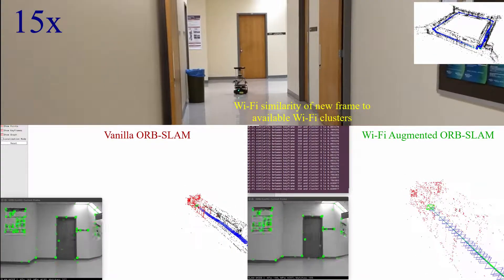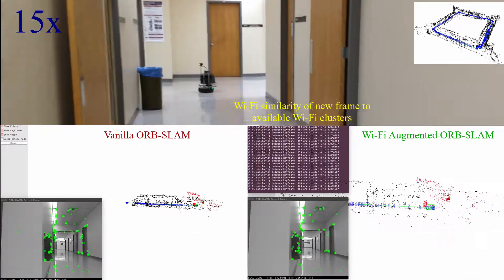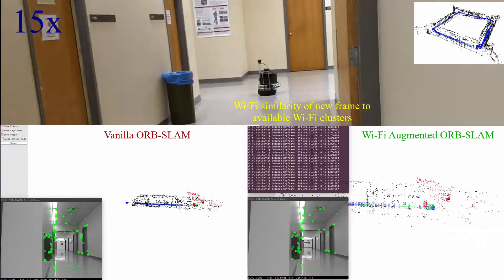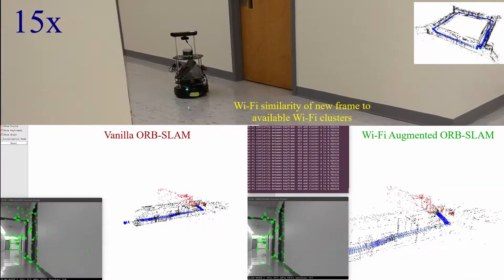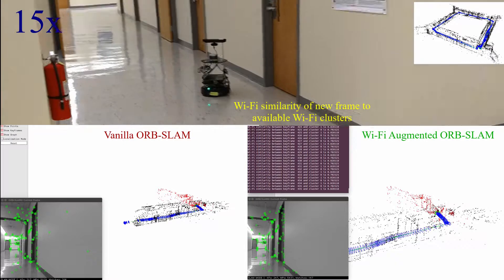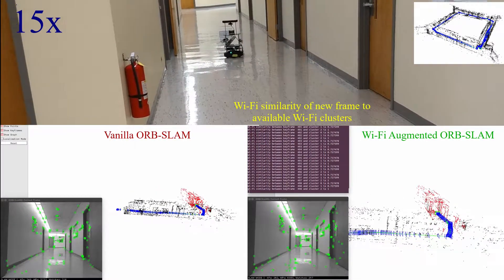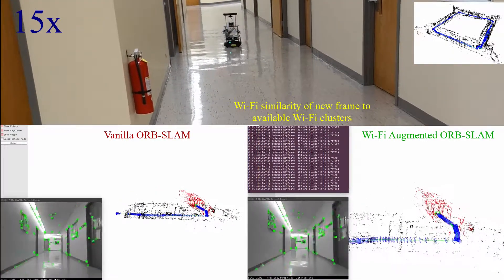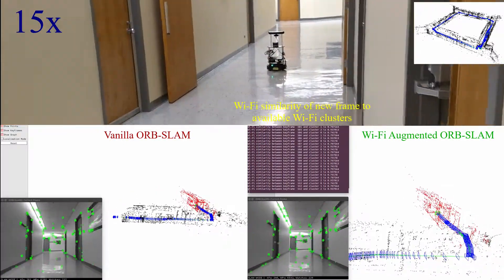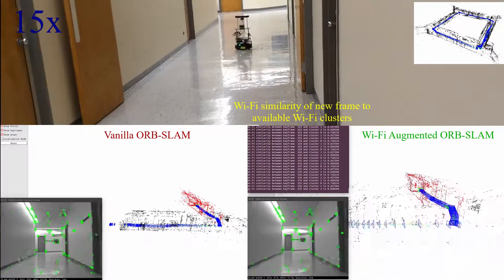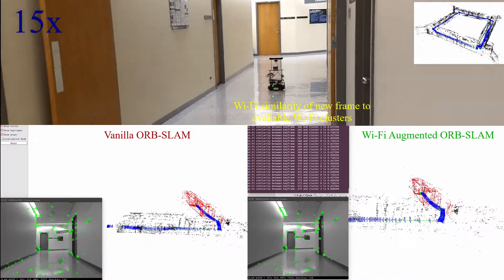The blue rectangles on the robot trajectory represent keyframes, and the red points in the sparse 3D map represent the area covered by co-visible keyframes with the current frame. These points are used for pose estimation of the current frame in the local mapping module.